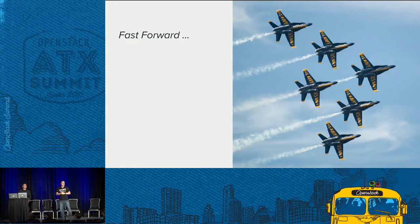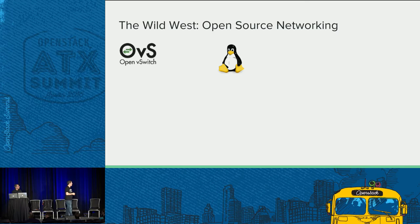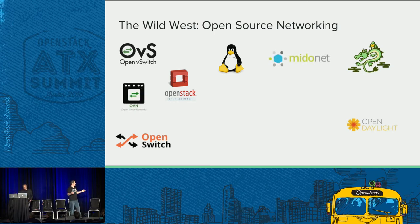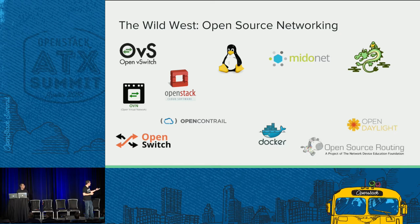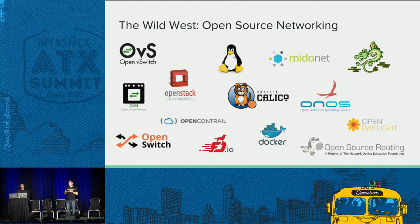Fast forward, and now we get to the point where it's kind of the wild, wild west at this point in open source networking. There has been an explosion of projects: OpenVSwitch, the Linux kernel, Ryu, Open Daylight, Open Switch, OpenStack Neutron, Midonet, Oven, Docker networking, Lib Network, Open Contrail, open source routing, Quagga, ONOS, Calico, and IO Visor — recently launched by the Linux Foundation. All of a sudden in the last few years, there's been this giant explosion of networking projects.